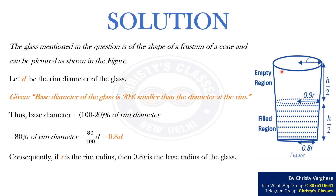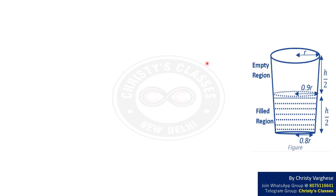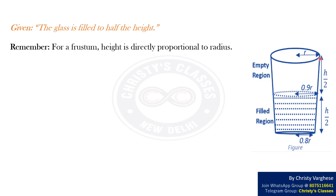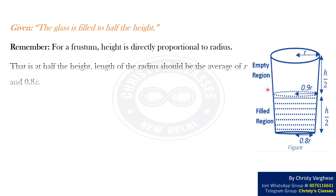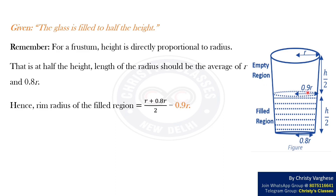Consequently, if r is the rim radius then 0.8r is the base radius of the glass. Let h be the height of the glass. Given that the glass is filled to half the height. Remember that for a frustum the height is directly proportional to the radius. Therefore, at half the height the radius equals the average of r and 0.8r, giving a rim radius of the filled region equal to (r + 0.8r) / 2 = 0.9r.